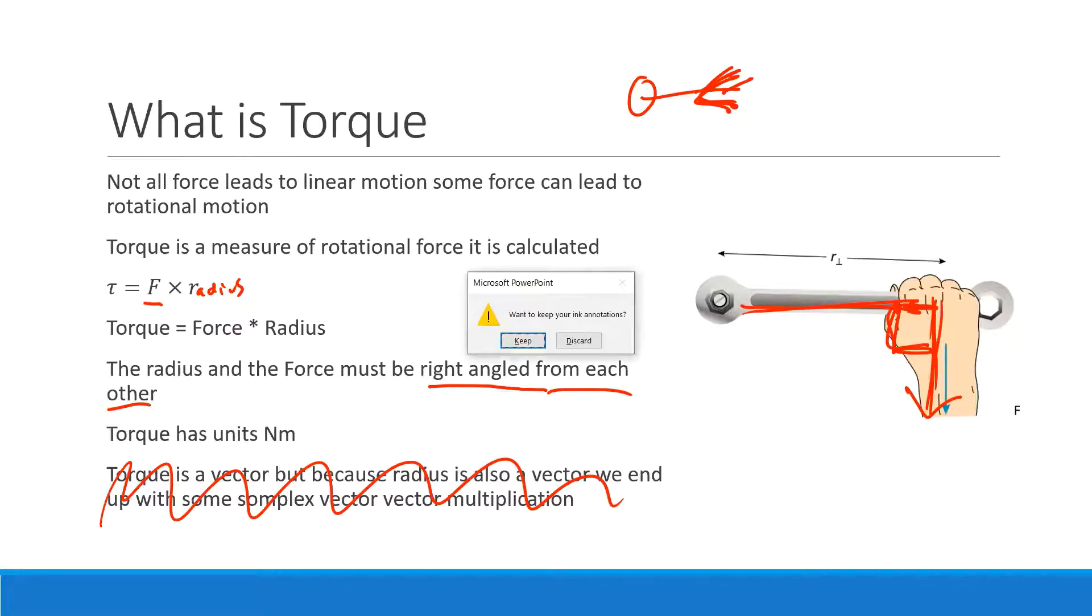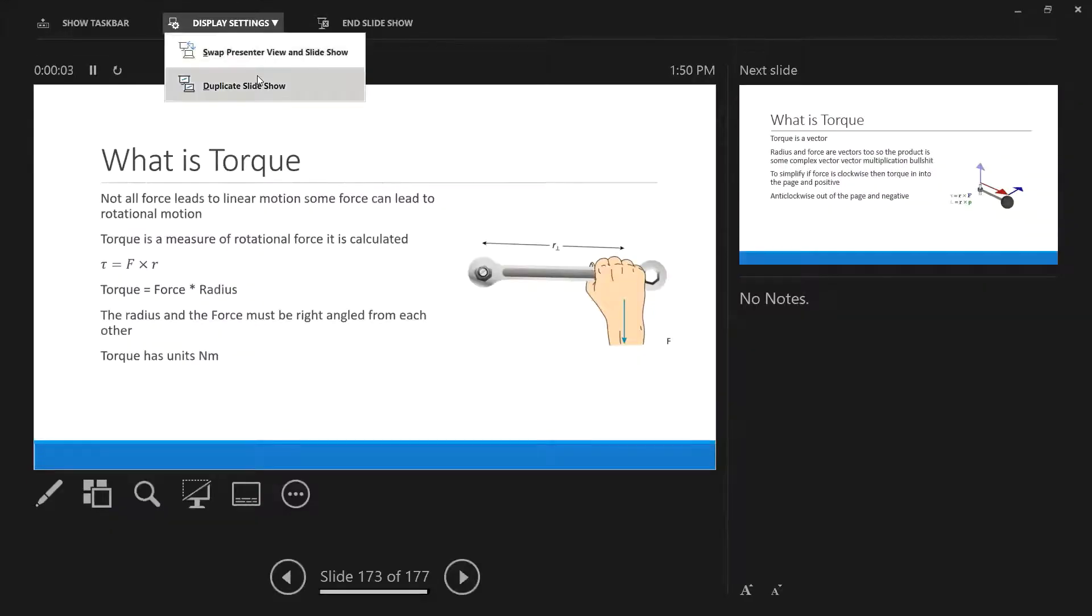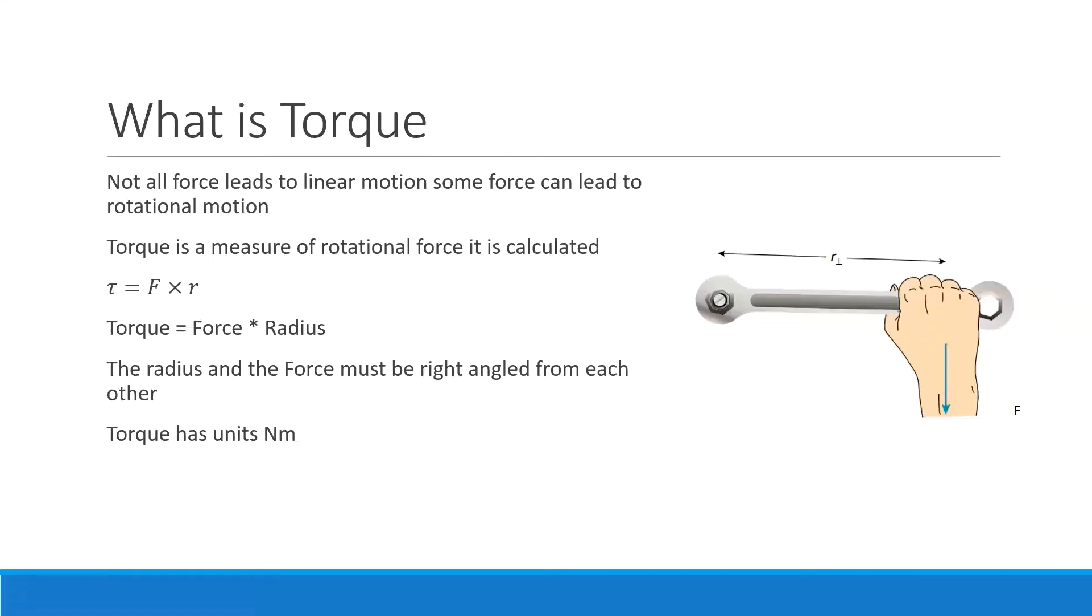Obviously if you take torque, you can divide it by force to find out the radius. You can take the same force and apply it at a different radius, and that will give you a different torque.